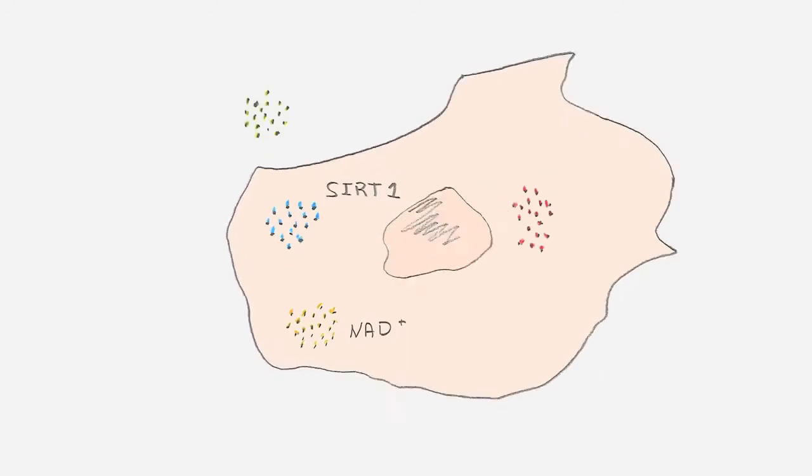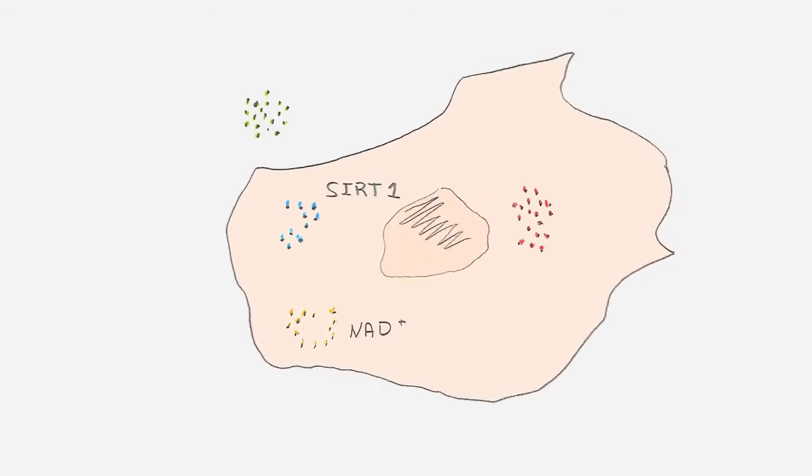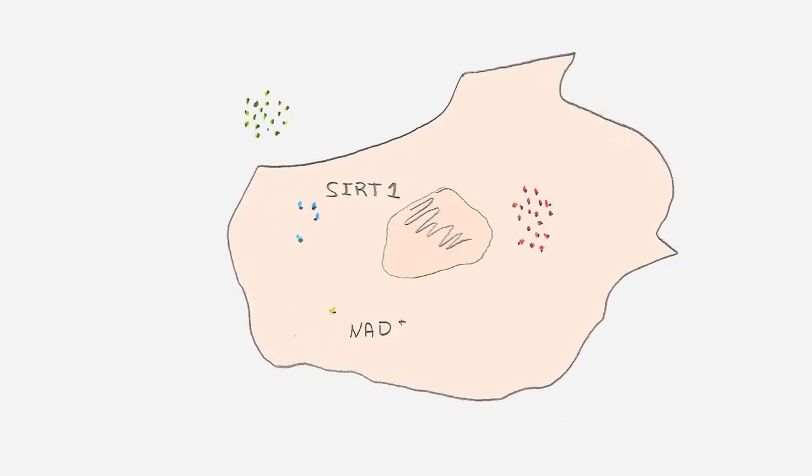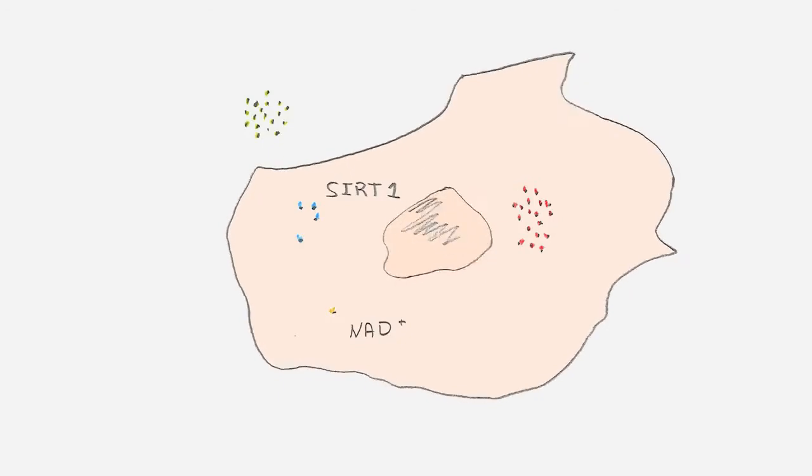But both NAD and SIRT1 decline as we age. They can no longer perform their role as the interface between the muscles and blood vessels.